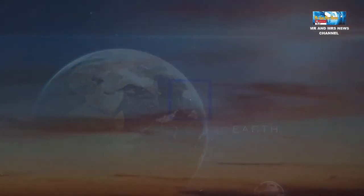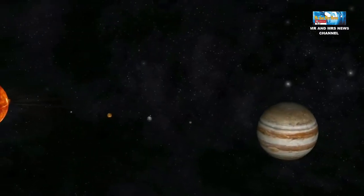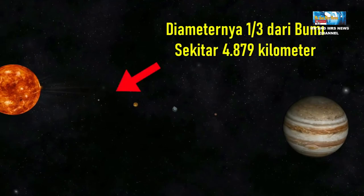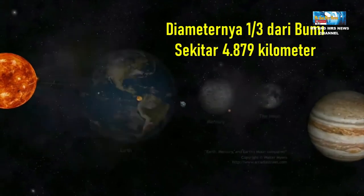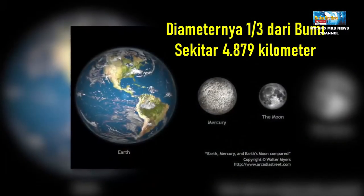Merkurius adalah planet terkecil di tata surya kita. Diameternya hanya 1 per 3 dari Bumi, yaitu sekitar 4879 km.